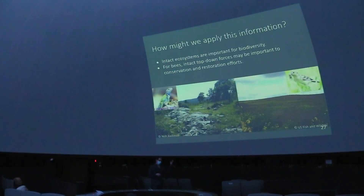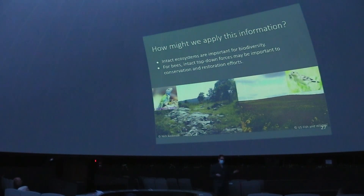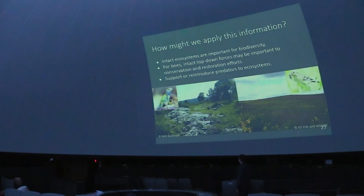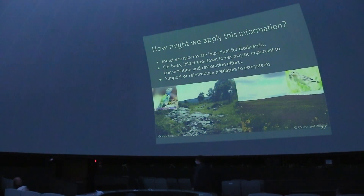For bees, these top-down forces might be very important — again I'm talking mostly about native bees. For honeybees, predators are not really a big concern; it's more the parasites and pathogens. The take-home message for habitat managers is that we probably need to support or reintroduce predators to ecosystems to help bring them back into balance. There's a lot of money for bee restoration, so maybe we can divert some of that to help these other species.